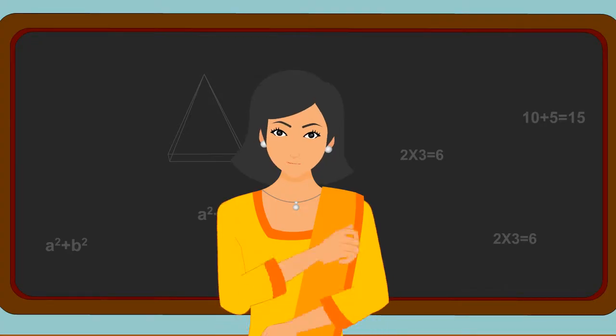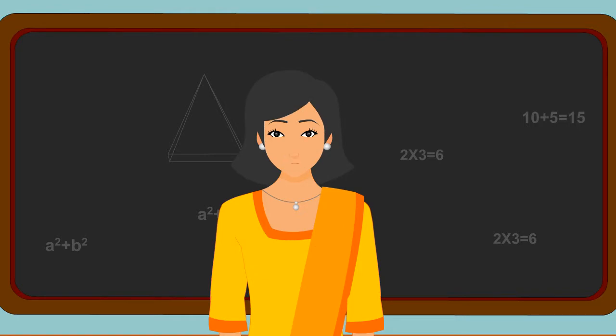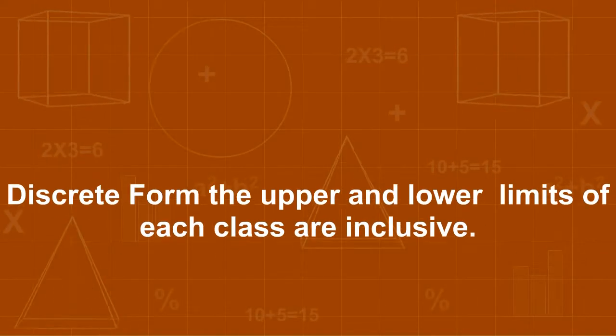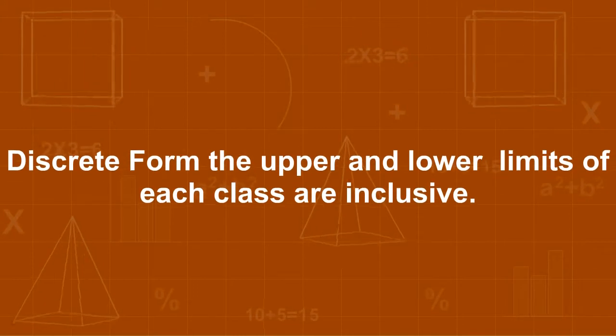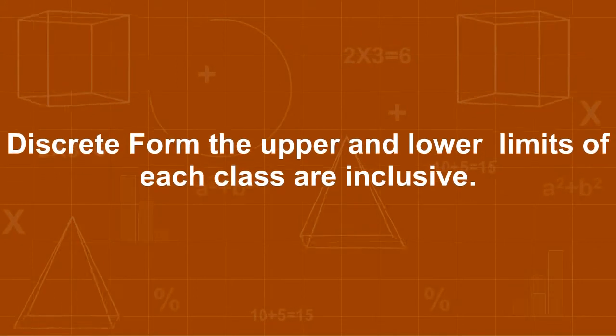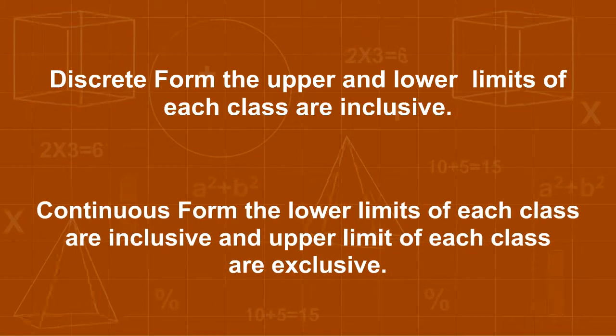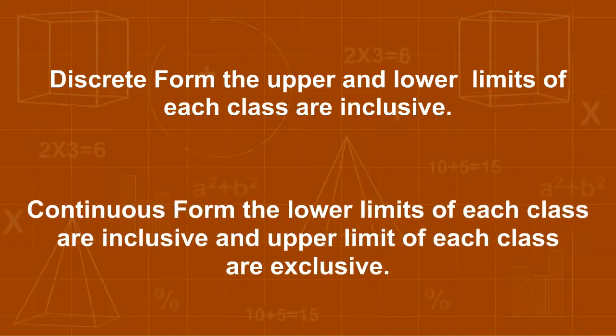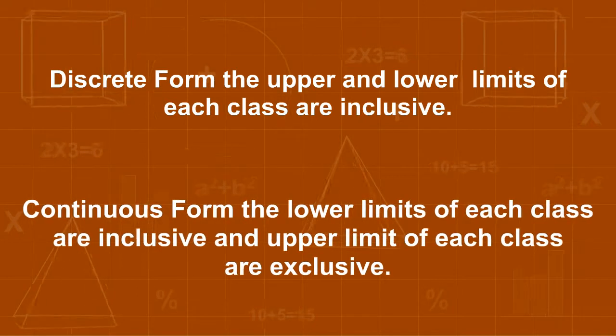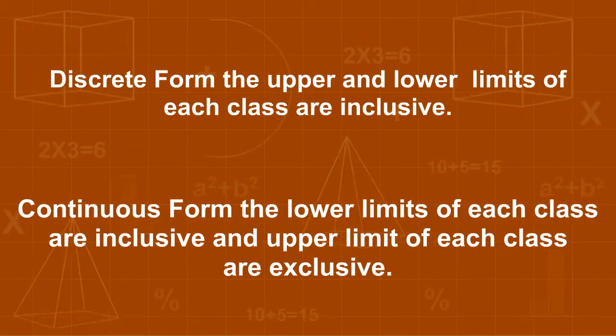Grouped Frequency Distribution table can be shown in two ways. Discrete form: In discrete form, the upper and lower limits of each class are inclusive. Continuous form: In continuous form, the lower limits of each class are inclusive and upper limit of each class are exclusive.